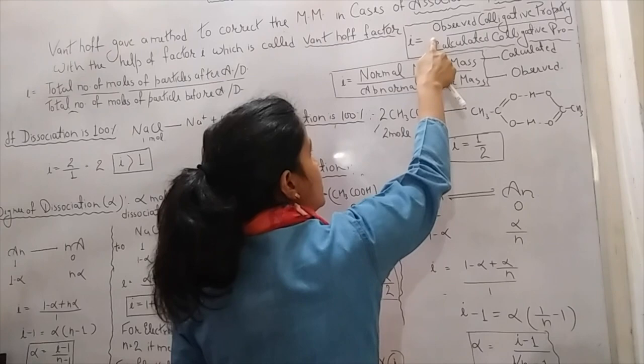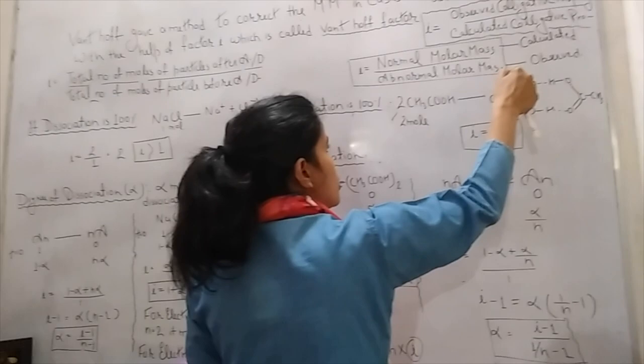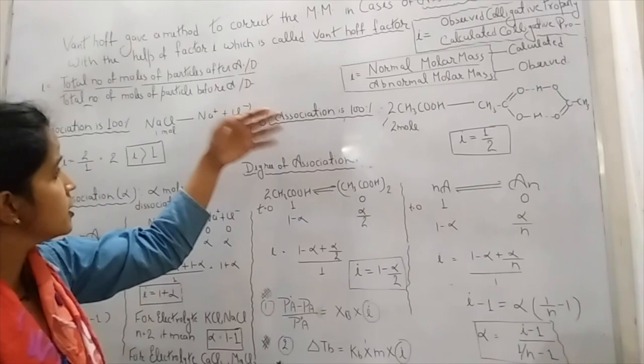Third: i = normal molar mass (calculated molar mass) divided by abnormal molar mass (observed molar mass). Here observed colligative property is in the numerator and observed molar mass is in the denominator, because molar mass is inversely proportional to the colligative property.